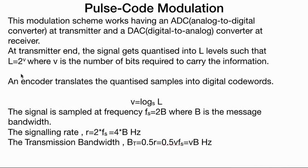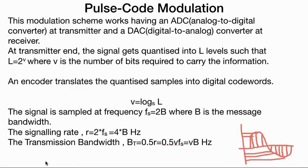At the transmitter end, the signal gets quantized into L levels. Suppose this is a sort of signal. You can see what quantizing into L levels means — these are the different levels demarcated on the Y axis, and at the X axis for a particular instant of time, whatever the signal value nearest possible to the Y value will be its quantized value.